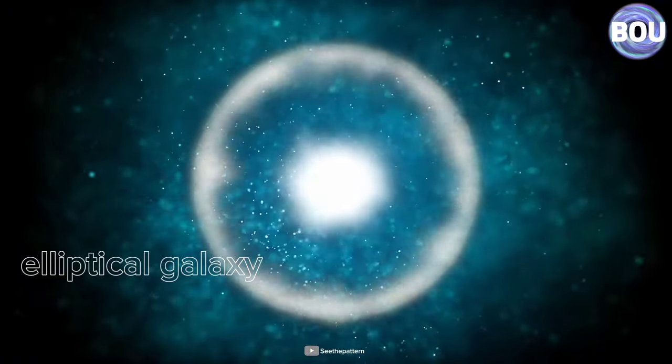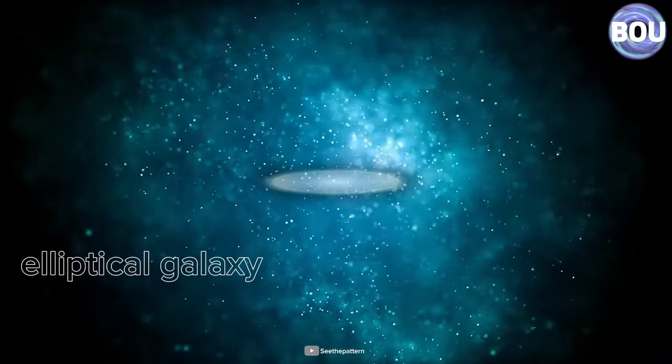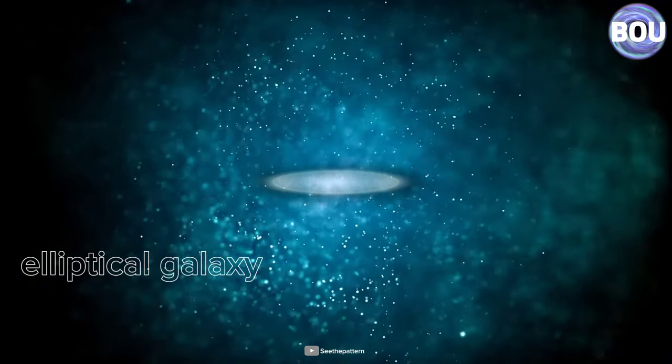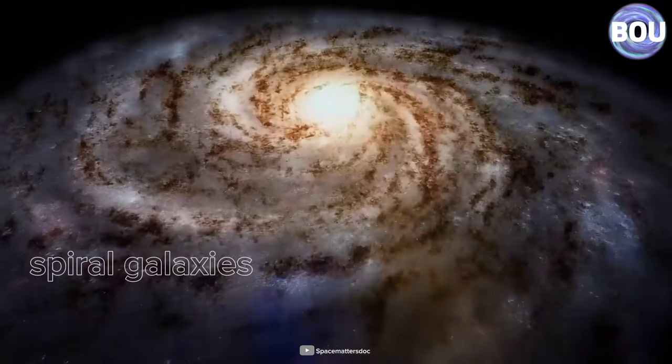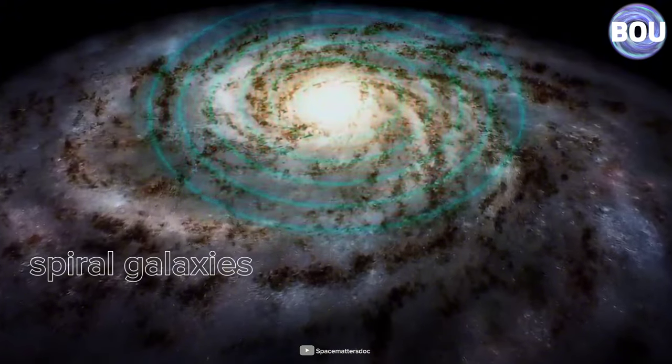The first type is elliptical galaxies, where all the stars in them have formed at the same time and have taken on an elliptical shape. And the second type is called spiral galaxies, which include our own Milky Way galaxy.